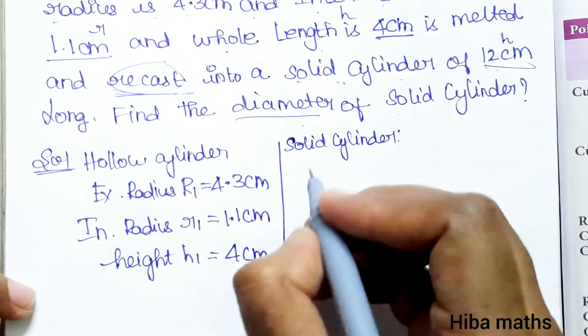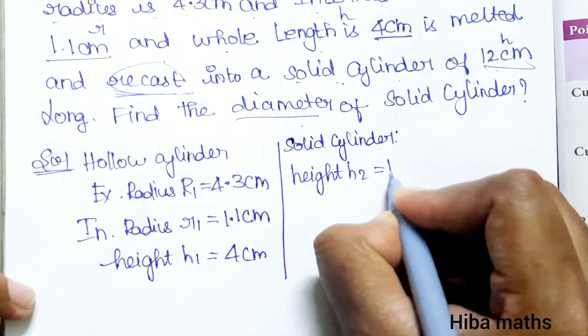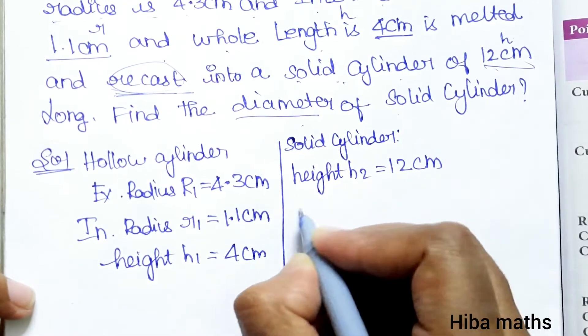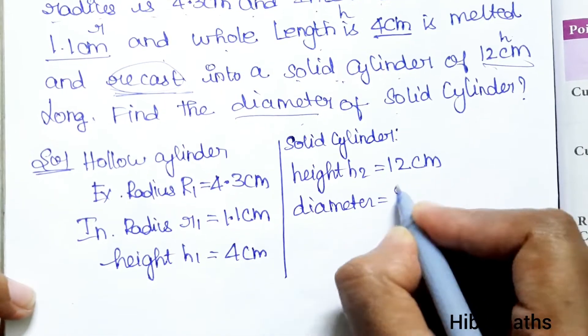Solid cylinder: height H2 is equal to 12 cm, and we need to find the diameter or radius.